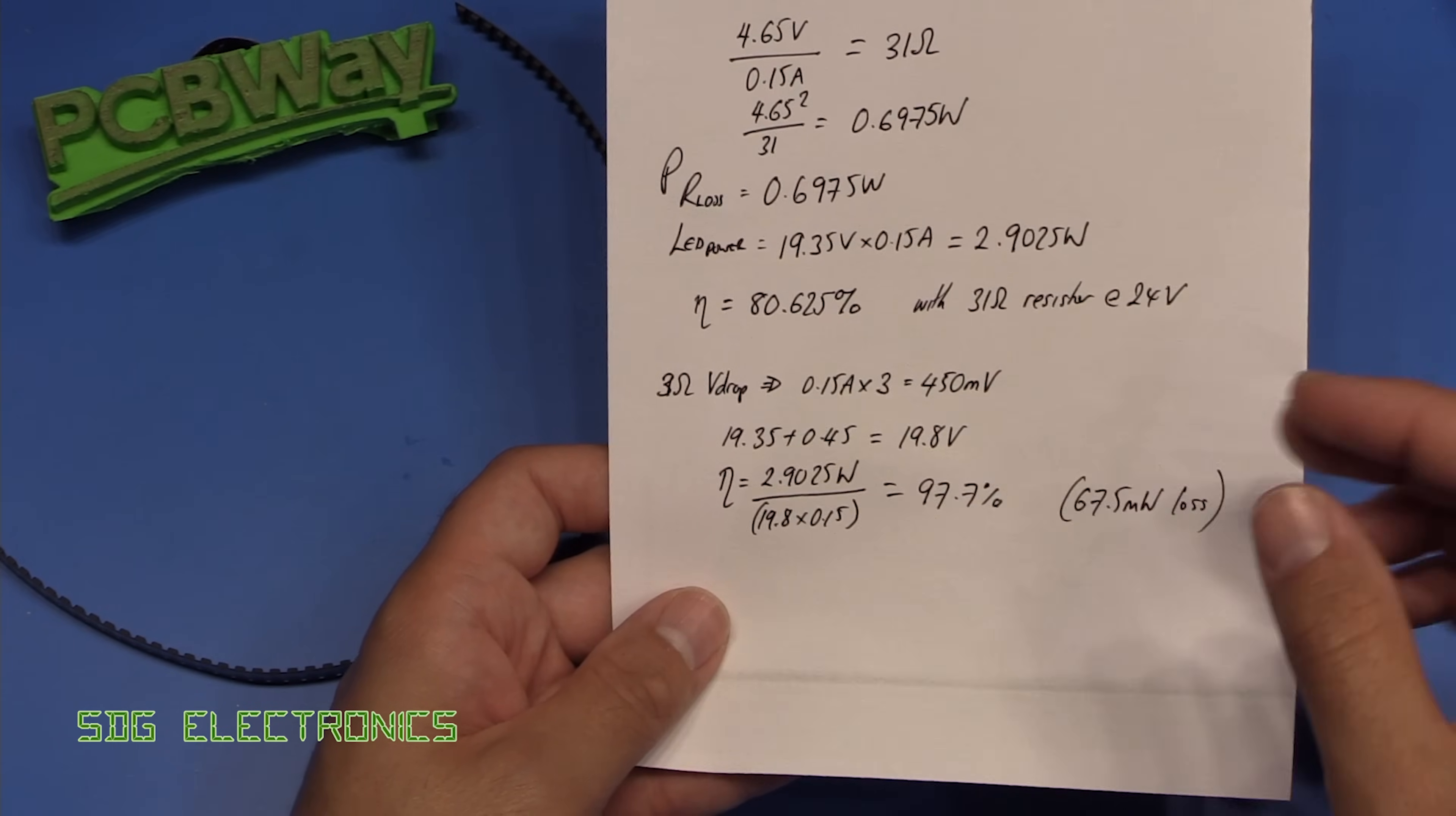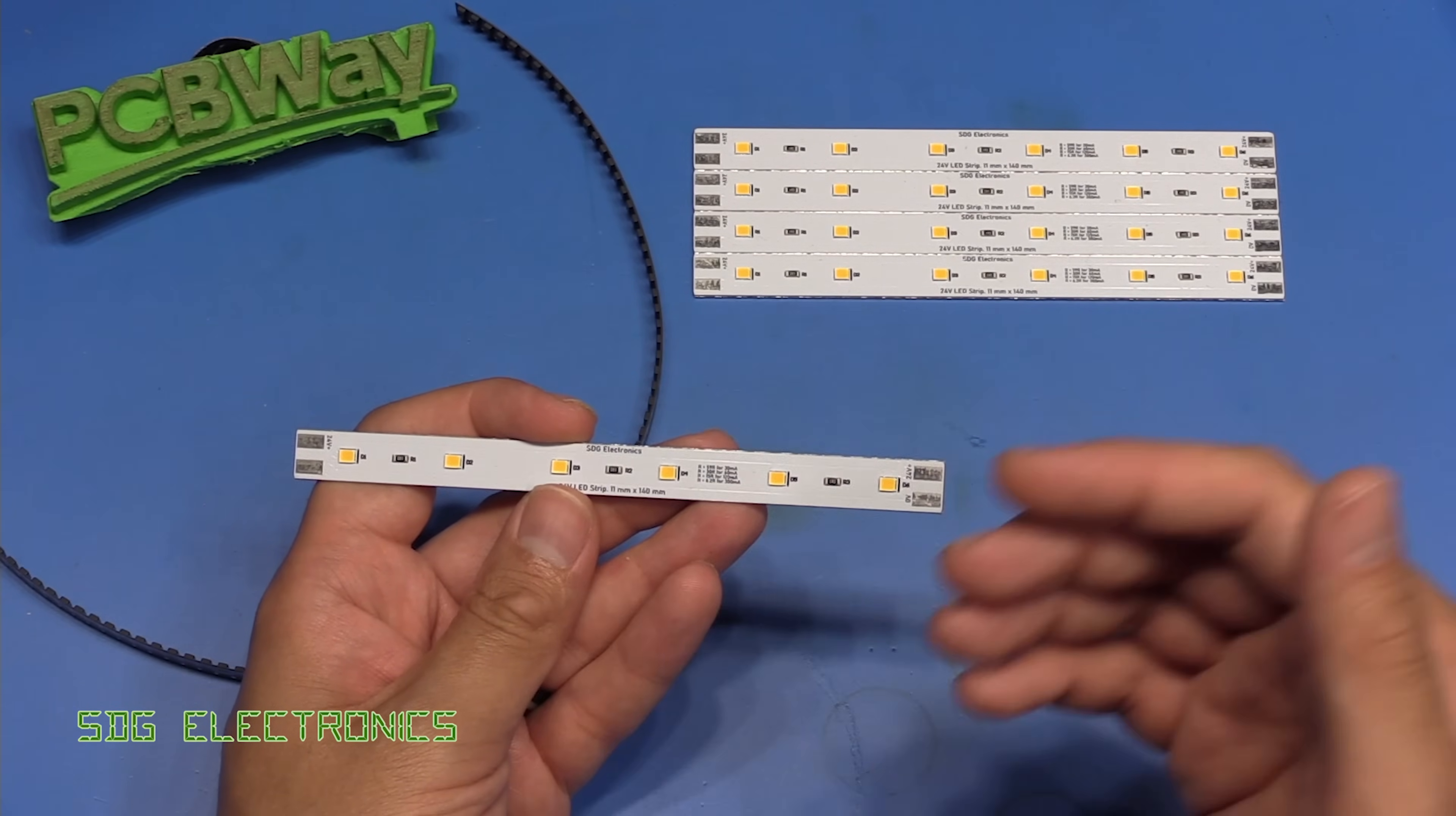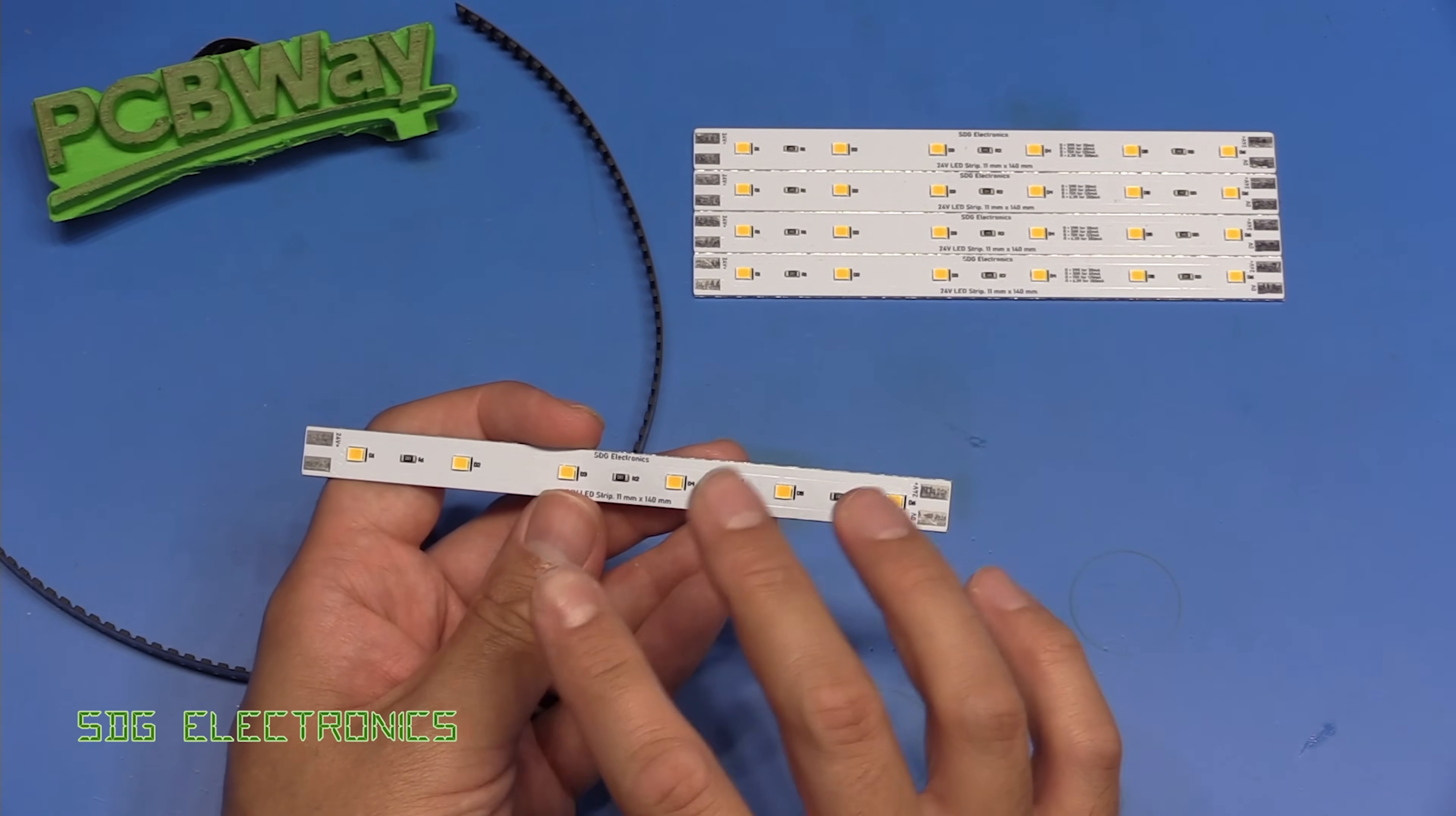But what I failed to take into account is that these LED strips do have quite a bit of voltage drop and considering each of these boards is drawing 150 milliamps it only took about 5 of these PCBs before the voltage had dropped so much that the difference in brightness was quite noticeable.